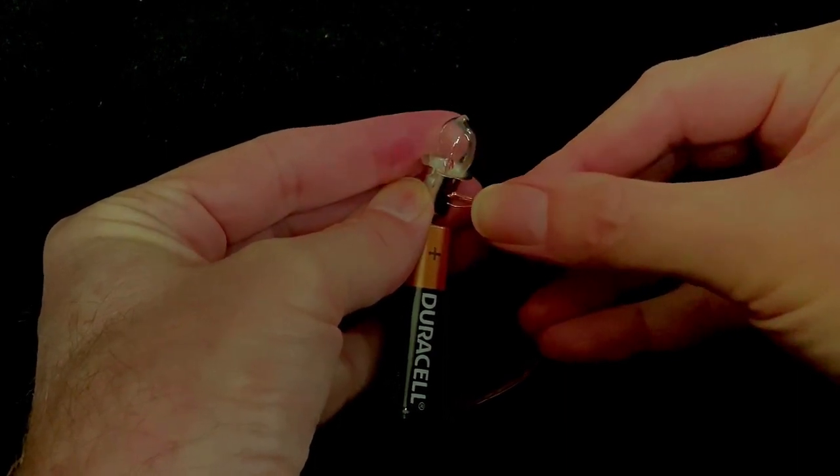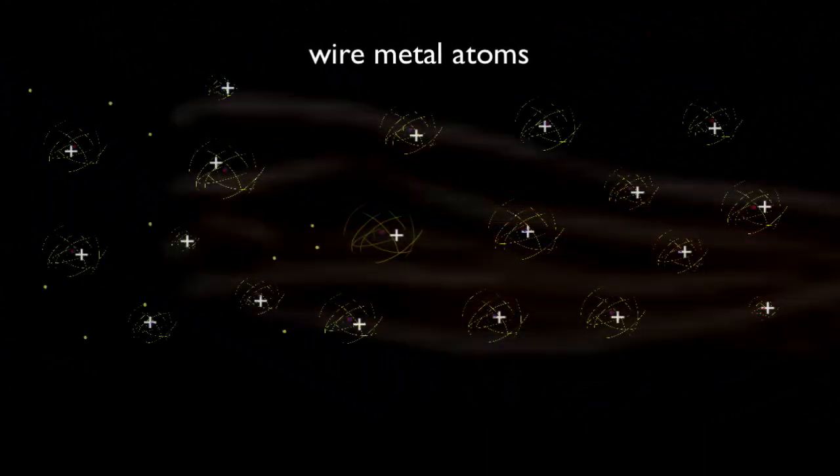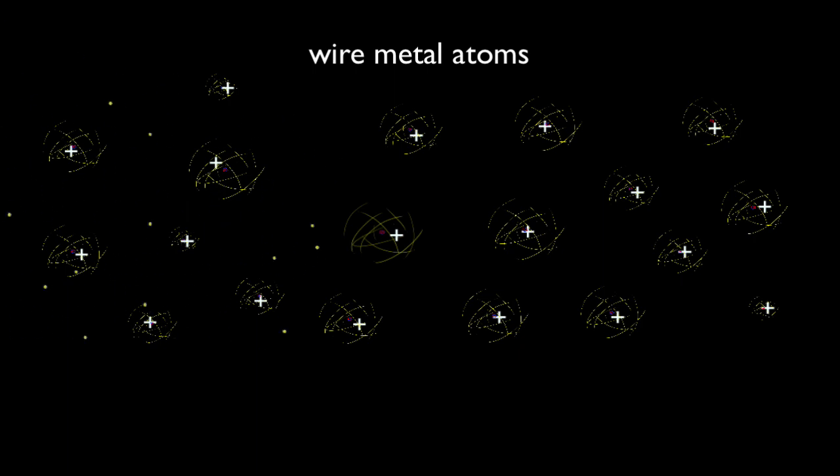When we say charge flows in a metal wire, we're talking about the movement of the metal's loose-conducting electrons. But get this, the speed at which those loose electrons travel down the wire is actually quite slow. They'll take about three hours to traverse a one-meter distance.